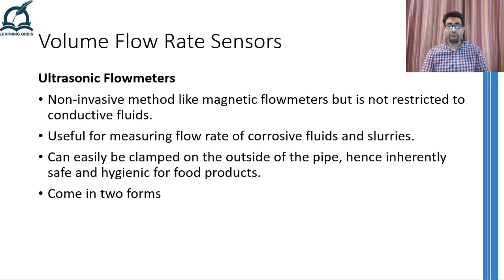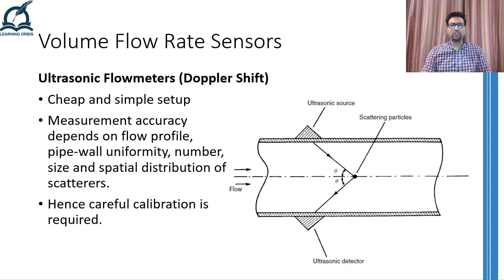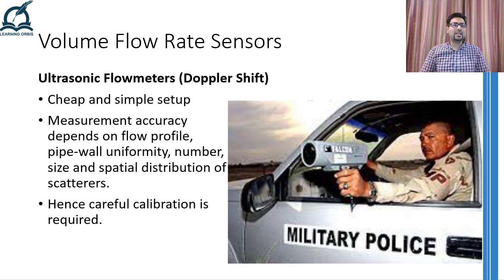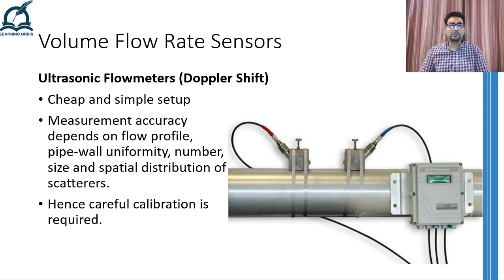Ultrasonic flow meters come in two different forms. One is called the Doppler shift ultrasonic flow meter, whereas the other is called the transit time ultrasonic flow meter. In the Doppler shift ultrasonic flow meter, ultrasonic waves are transmitted by the transmitter and reflected by air bubbles or other particles present in the flowing fluid. The reflections are detected by the ultrasonic detector. Since the reflection was created from a moving particle, the reflected wave will experience a Doppler shift in its frequency. Just like a speed sensor used by traffic police, the Doppler shift in frequency is directly proportional to the speed of the moving particle and hence the speed of the fluid in the pipe.